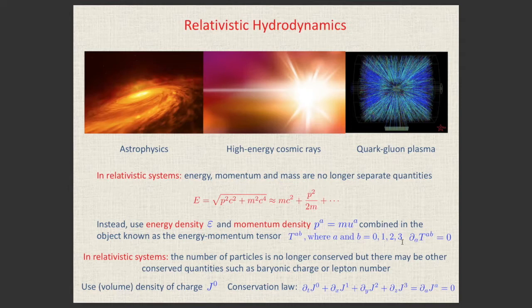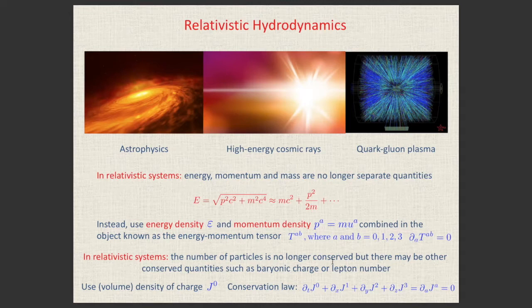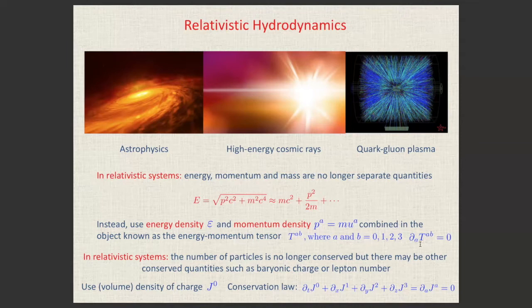In relativistic systems, particle number is no longer conserved — with enough energy you can create particle-antiparticle pairs from the vacuum. Instead, quantities like baryonic and leptonic charge are conserved, expressed as four-currents J^a. The conservation equations are the four-divergence of J^a equals zero, and conservation of the energy-momentum tensor T^{ab}. These are the main building blocks of relativistic hydrodynamics.